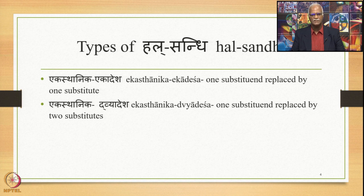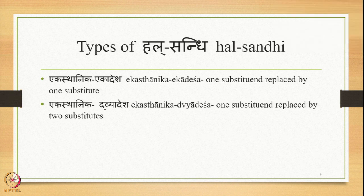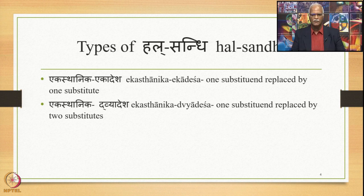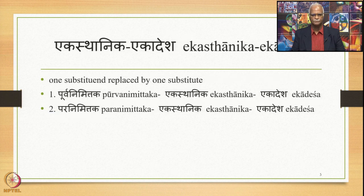However, Ach Sandhi has Dvishthanika Ekadesha, whereas Hal Sandhi has Ekasthanika Dvyadesha. Ekasthanika Ekadesha means one substituent replaced by one substitute, and Ekasthanika Dvyadesha means one substituent replaced by two substitutes. Ekasthanika Ekadesha can also be classified under two heads: Purvanimittaka Ekasthanika Ekadesha and Paranimittaka Ekasthanika Ekadesha.